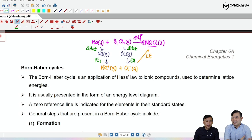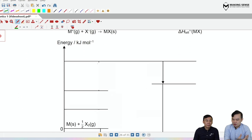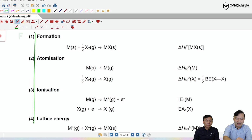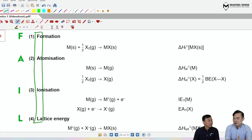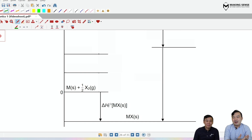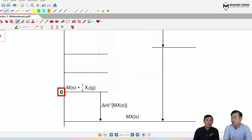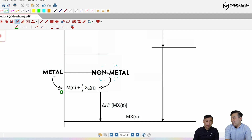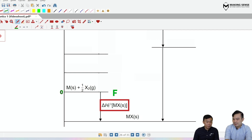Beyond the cycle diagram, questions may use an energy level diagram instead. We use the acronym FAIL — F, A, I, L — to construct it. F stands for formation: start at zero energy level representing the elemental form. Assuming the ionic substance is MX and formation is exothermic, draw an arrow going downward from reactants to products.